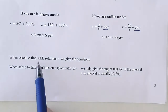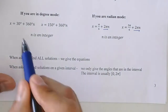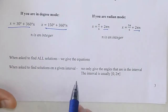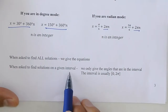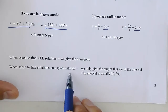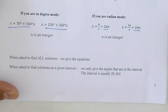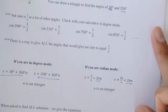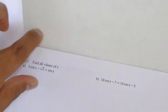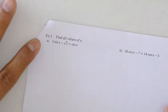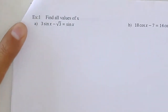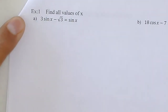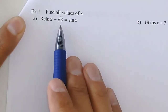There'll be times when we ask you to find every single angle — that's when you give the general equations with +2πn. There'll also be times when we only ask for angles in a given interval, and then you only give those specific angles. Now let's start working on examples you'll need to write down. Number one: 3sin(x) − √3 = sin(x). I need to solve for x.